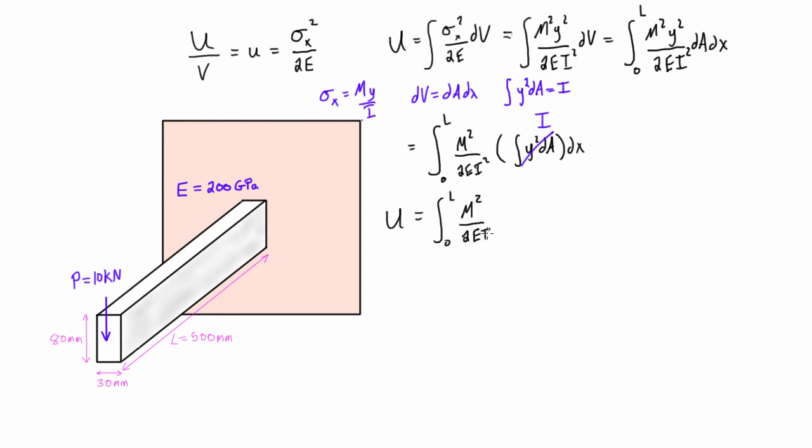Now this is a bit of a simplification. We are neglecting the effects of shear, and this is just the elastic strain energy due to bending. You can add in shear, but the purpose of this video is just to talk about strain energy due to bending, so we're just making that simplification. And this is the expression that we're going to be using. So again, just watch out, we're neglecting the effects of shear there.